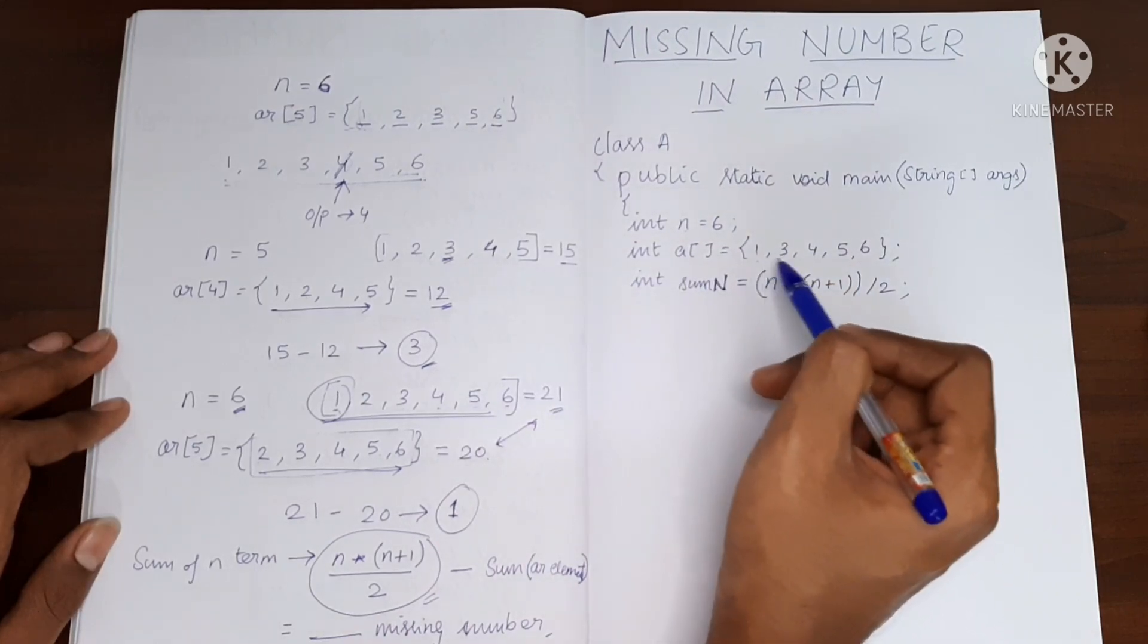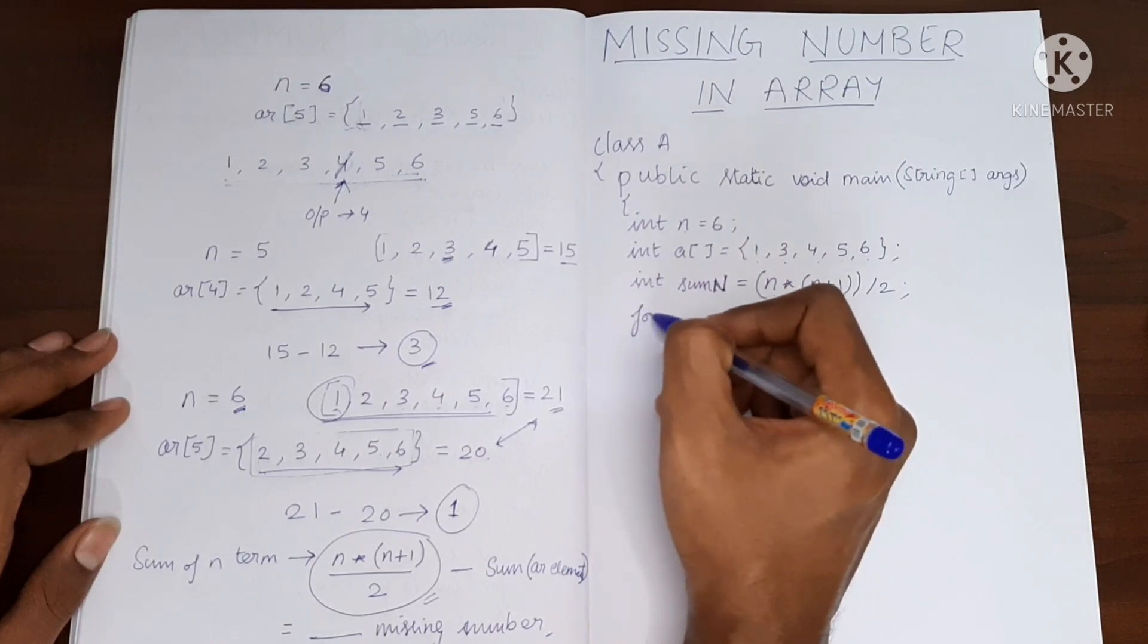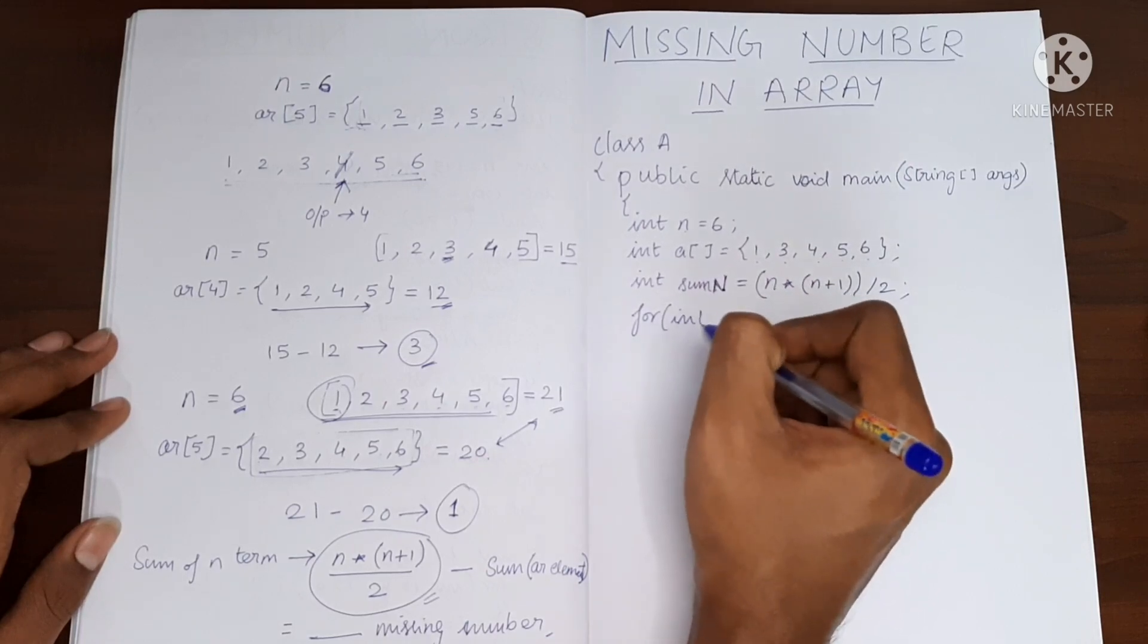Now we have to find the sum of the elements inside the array. For that we will use a for loop, use a simple for loop.